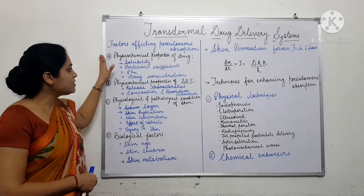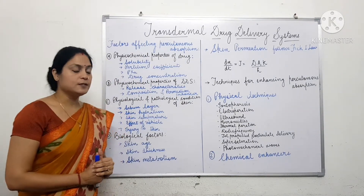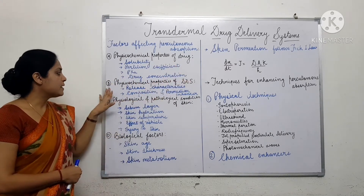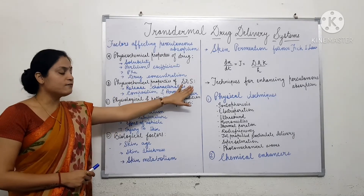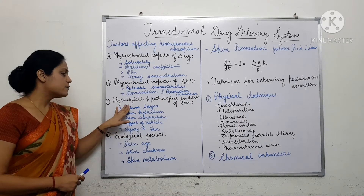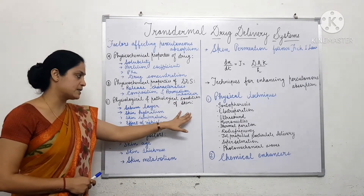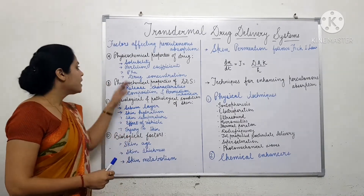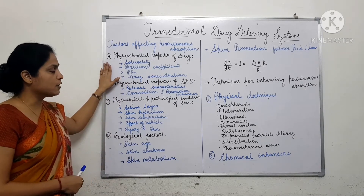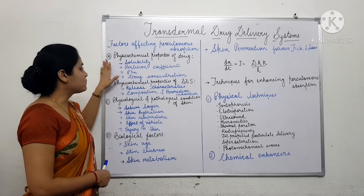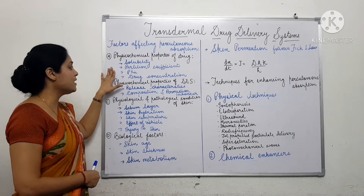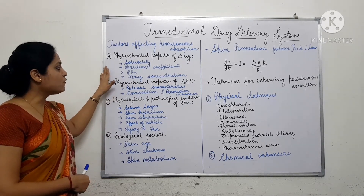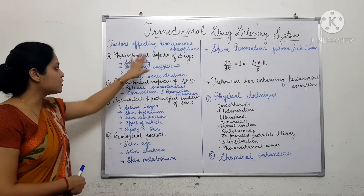The various factors which affect percutaneous absorption may be either physicochemical properties of the drug, physicochemical properties of the drug delivery system, or physiological and pathological conditions of skin and biological factors. In the physicochemical properties of drug, the major properties that affect absorption are solubility, partition coefficient, pKa and drug ionization, and drug concentration. Let's discuss each of these factors one by one.